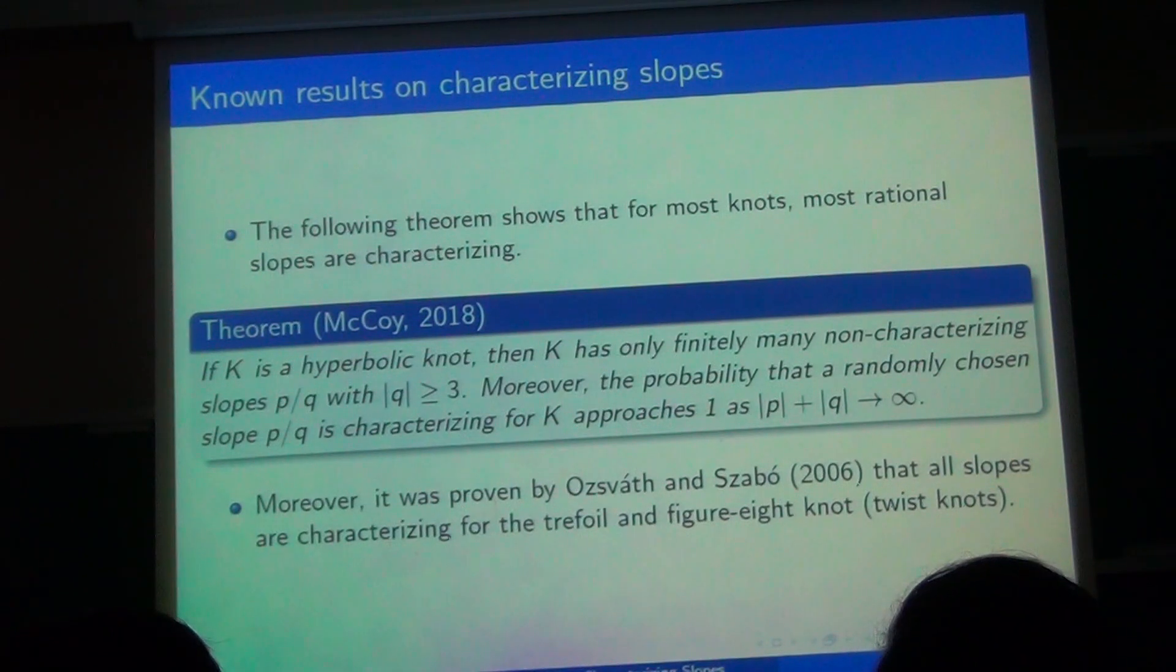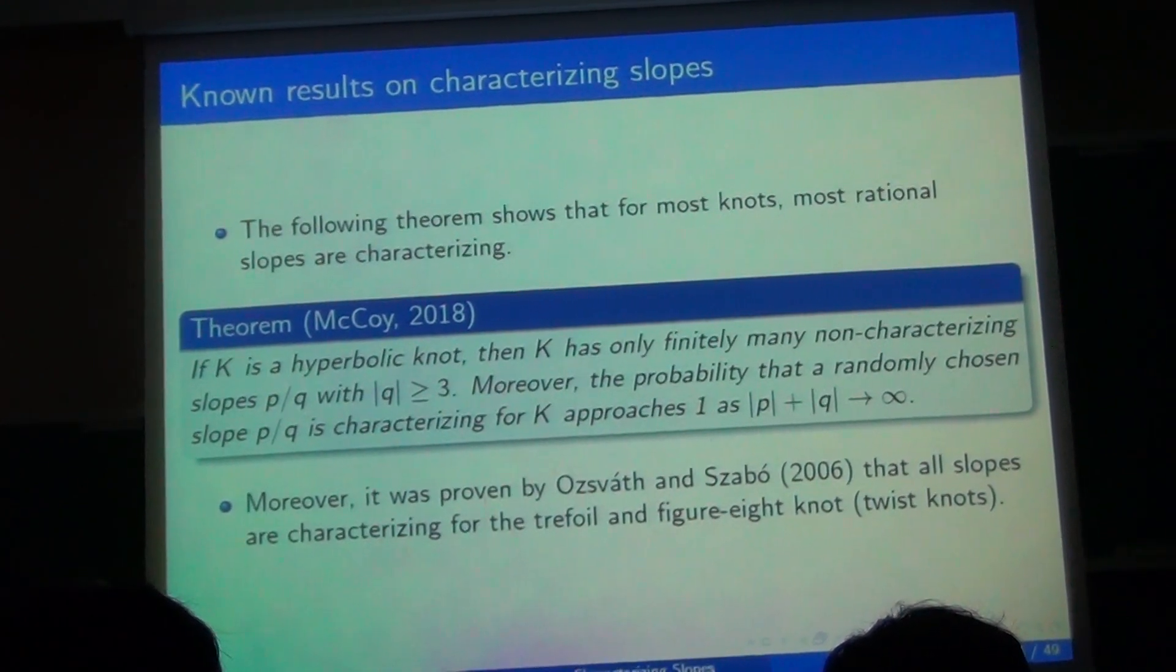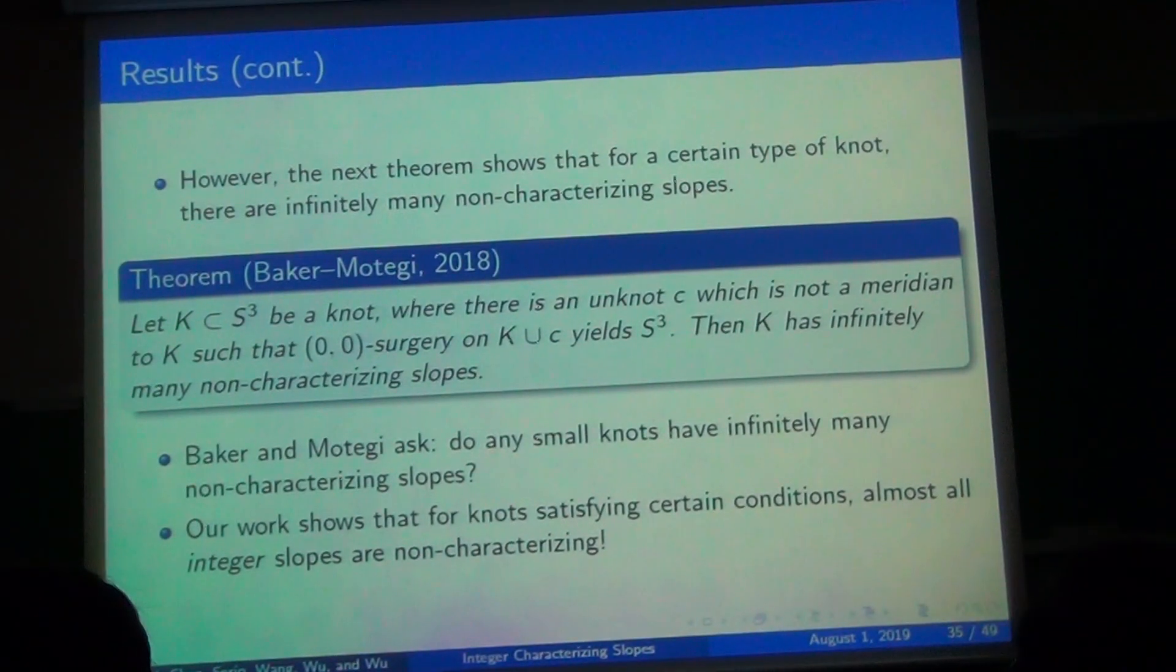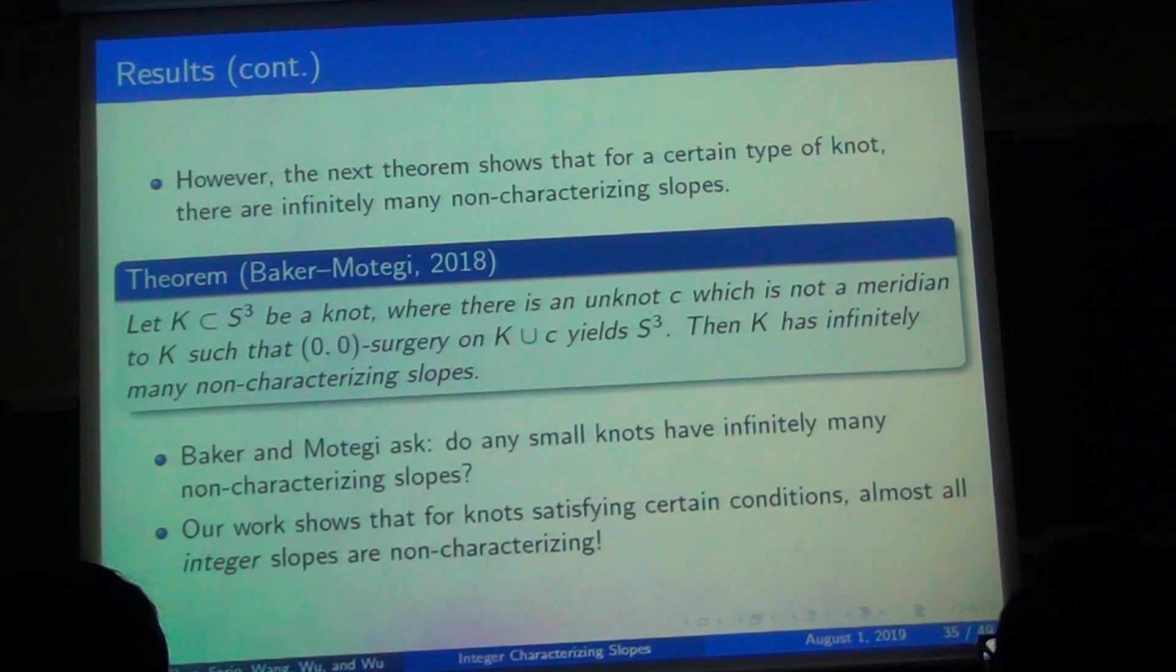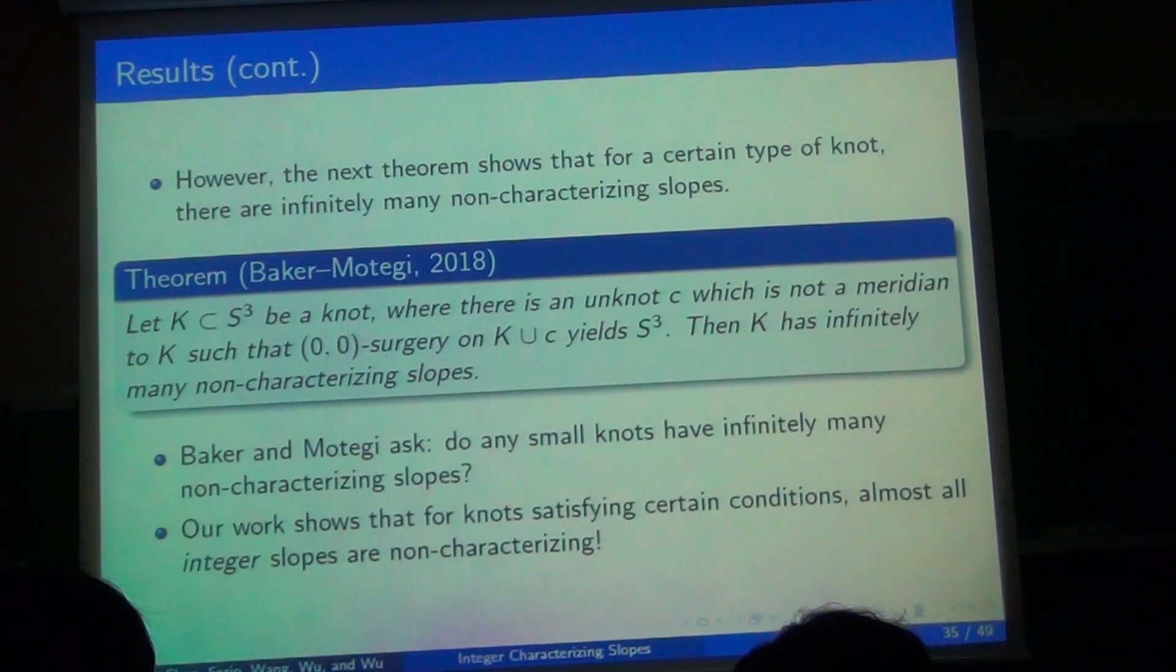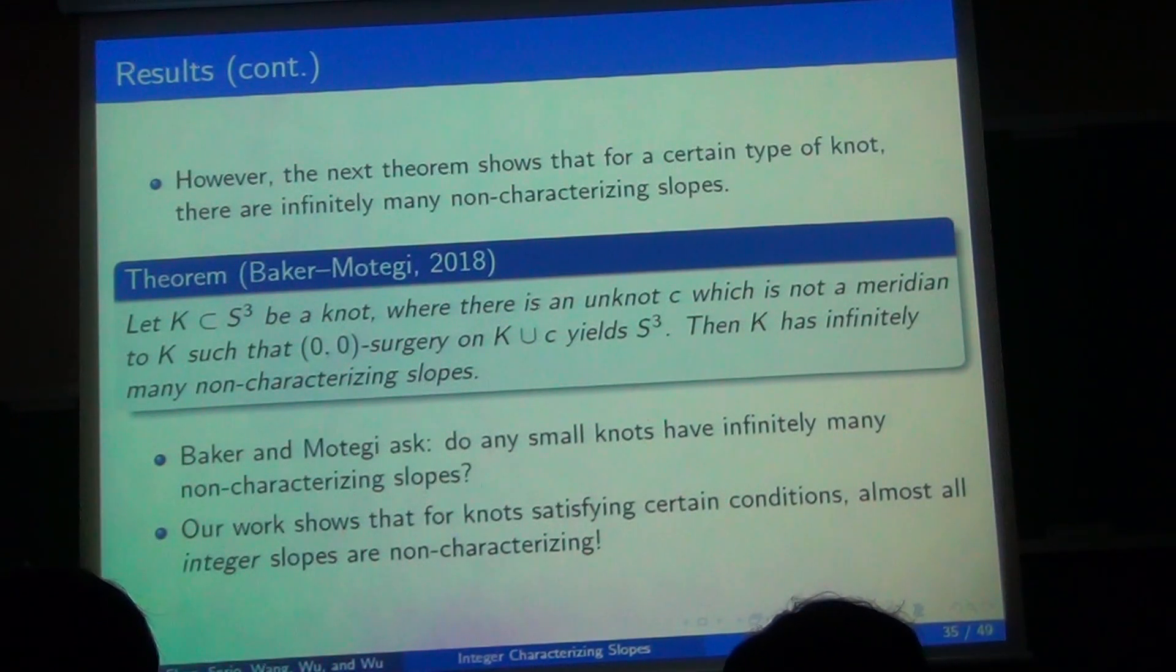So now we can look at some of the homeomorphisms and characterizing slopes. This theorem actually says that for most knots, most slopes are characterizing. And moreover, for some of them, twist knots. For small twist knots, it was shown that all slopes are characterizing. And in fact, it was conjectured that for all twist knots, all slopes would be characterizing, but we actually found that that's not true.